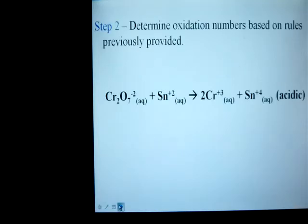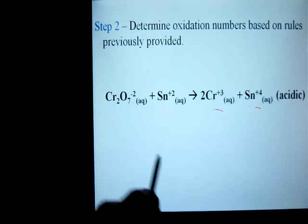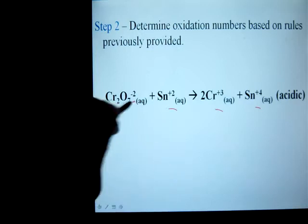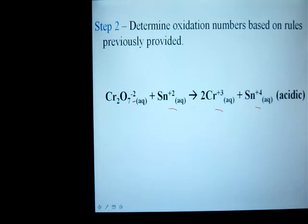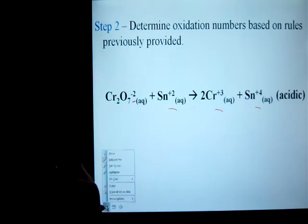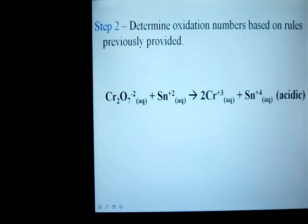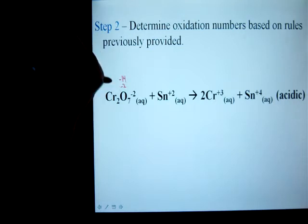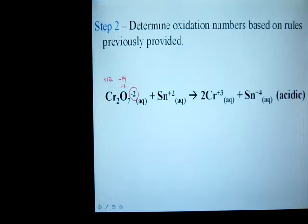Next thing I'm going to do is to determine the oxidation numbers of everything. Now some of them are given: the tin 4 is given, chromium 3 is given, tin 2 is given. This minus 2 is not the oxidation number I care about. That's the charge of that whole ion. I need to figure out the charge on the O and the CR. Well, the O is minus 2 as it always has been, 7 of them for minus 14, which means the two chromium must add to plus 12. Remember, plus 12 minus 14 equals minus 2. So then each chromium, therefore, is going to be plus 6.